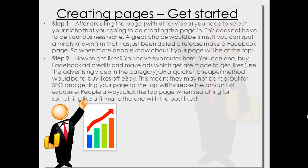So step two: how to get likes. Now you've got two options here. One, you can buy Facebook ad credits and make ads which are made to get likes. You can use the advertising video in the category which can show you how to do that really well. Now the pros with that is you're going to have real people that are interested. But a quicker and cheaper method would be to buy likes off eBay. Now this means that they may not be real, but for SEO purposes and getting the page at the top, that would increase the amount of exposure.